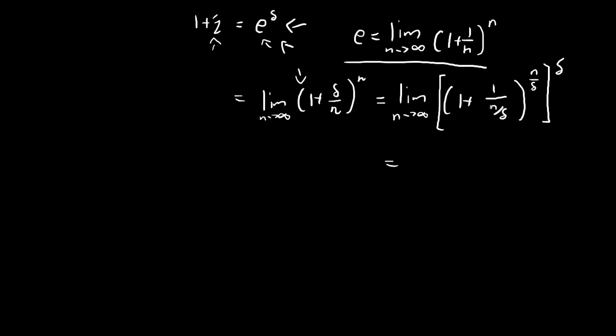So when n tends to infinity, n over delta tends to infinity as well. So this whole term inside the bracket is going to be equal to e, so this whole expression is going to be equal to e to the power of delta. And so there we have it, now we've shown that this term is actually equivalent to this term.